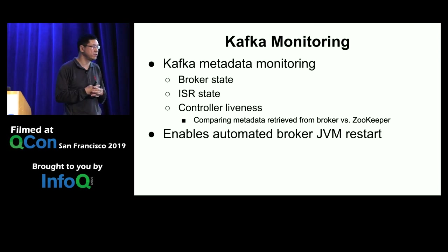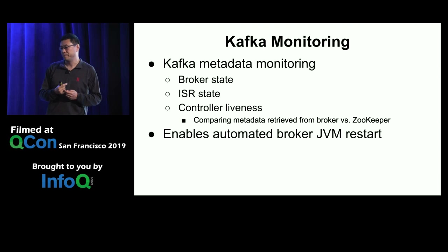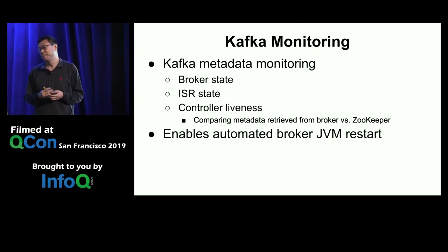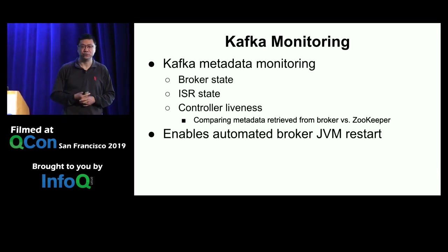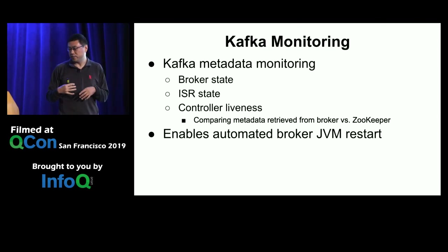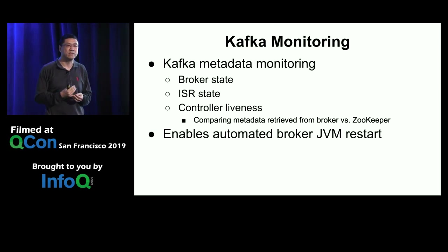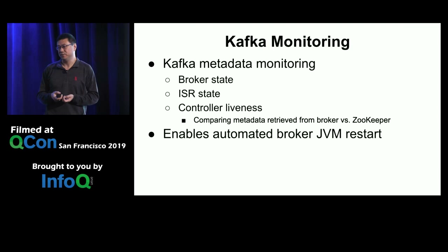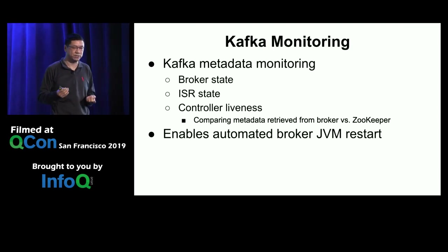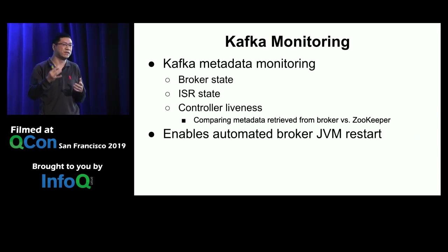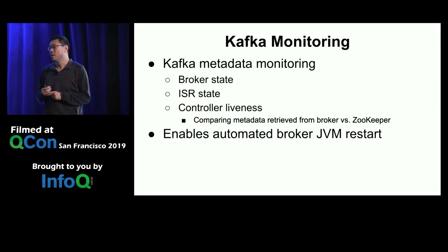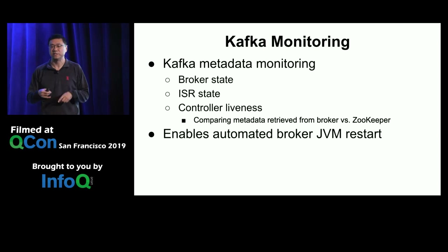Another important functionality in this external monitoring service is monitoring Kafka metadata, which we do in two ways. We watch the ZooKeeper nodes and look at their metadata, and we monitor the ISR state in ZooKeeper. At the same time, the service talks directly to brokers to get metadata, and we match the metadata from brokers versus ZooKeeper to ensure they match. A mismatch usually indicates some kind of network partitioning — either the broker can't talk to ZooKeeper or can't connect to the rest of the Kafka cluster. At that point, you need to enable automated actions, such as restarting the JVM of your Kafka broker or completely replacing that broker.